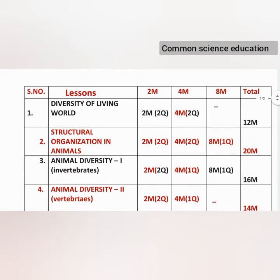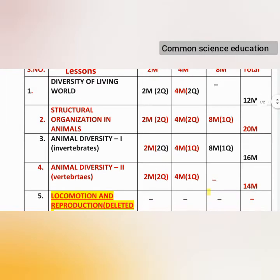And Structural Organization in Animals: 2 marks, 2 questions; 4 marks, 2 questions; and 8 marks, 1 question. So total marks: 20 marks.